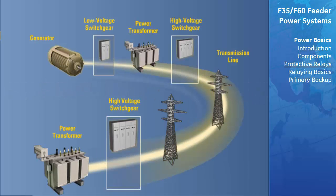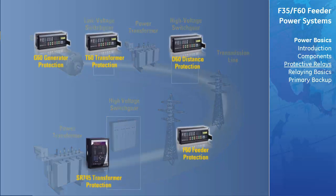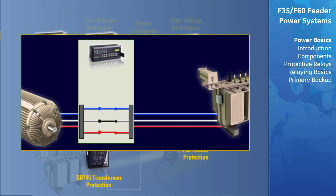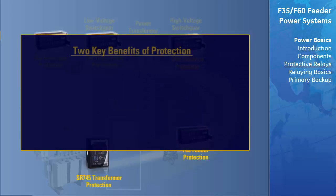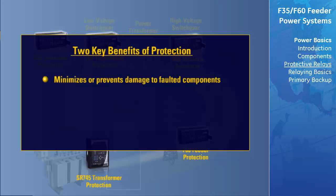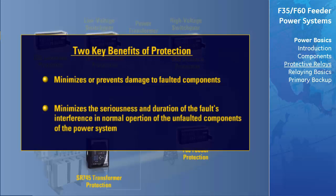Protective relays are placed on the system to reduce the number of alternate links to a minimum, by avoiding equipment damage or limiting it to the single component that may be in trouble. The relays quickly locate the fault and trip circuit breakers, which interrupt the flow of current into the defective component, thereby isolating it. Two benefits of this quick isolation are: first, it minimizes or prevents damage to the faulted component, reducing time and expense of repairs and permitting quicker restoration into service.